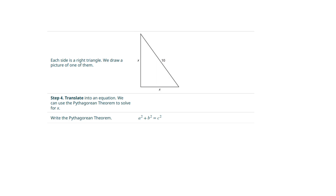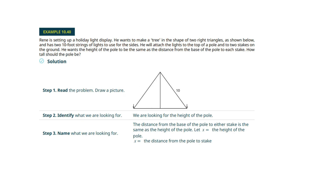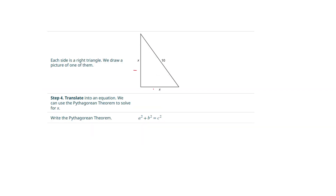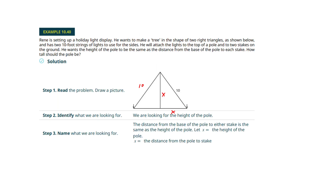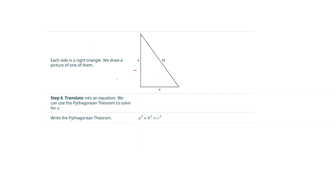Now we've got a string of lights problem. He's got two 10-foot strings of lights and will attach them to the top of a pole. He wants both sides to be the same length. We only need the distance from the base of the pole to each stake — just x. If I draw a picture, I've created a right triangle.